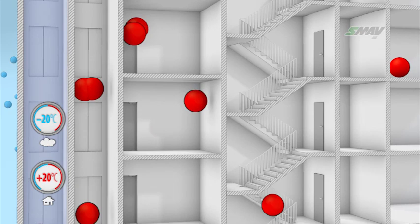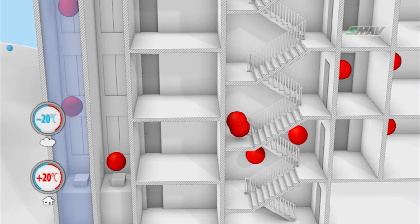The higher the temperature, the lower the density. On the other hand, differences in density significantly affect pressure distribution in buildings.